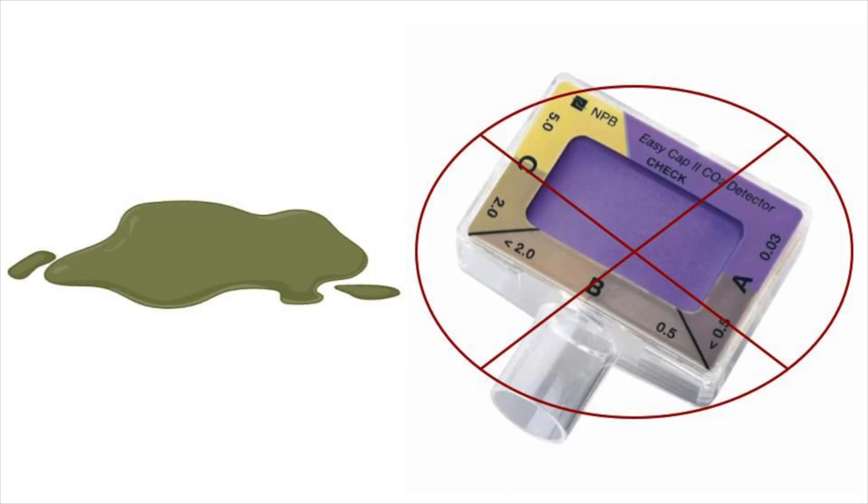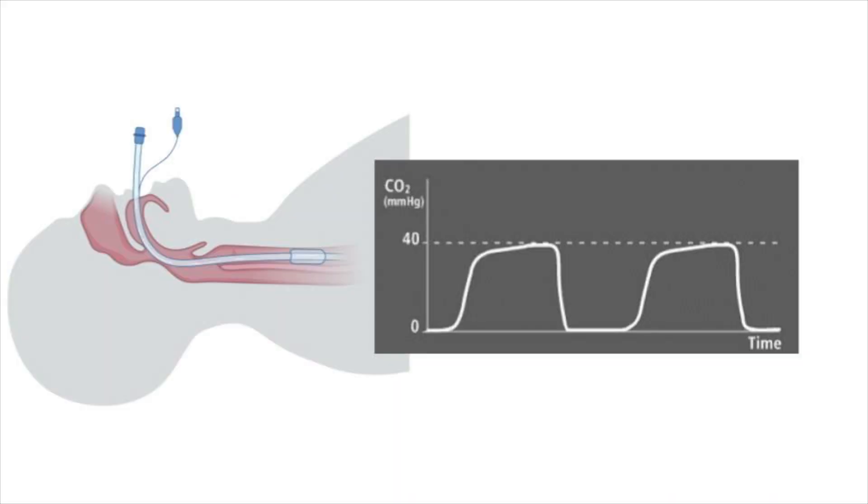Another place that the calorimetric device falls short is that if it's touched by any vomitus, it's going to turn yellow, even though it might not be in the right place. So that's an important limitation to know. Instead of using those calorimetric devices, we should be using continuous waveform quantitative end-tidal CO2 to confirm our intubation, as well as to confirm that the tube is continuing to sit in the right place throughout the resuscitation.